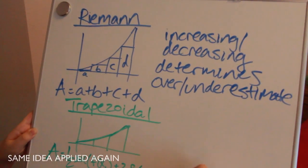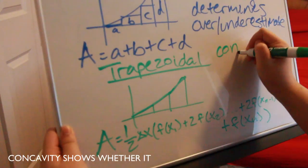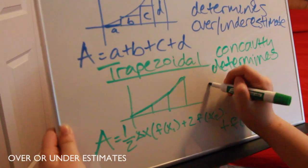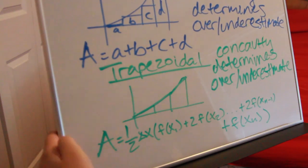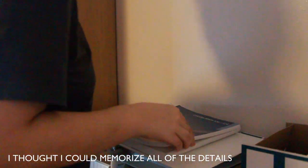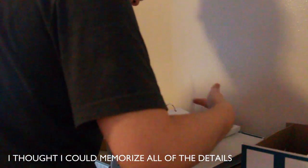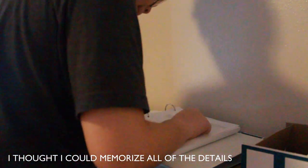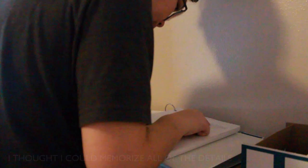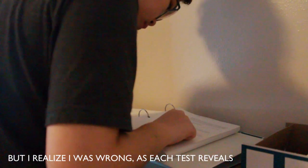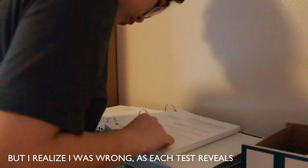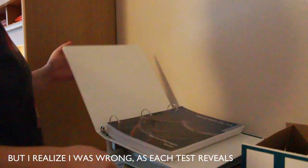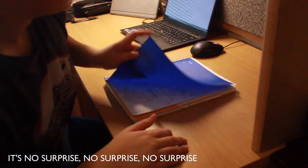Then trapezoids come in, same idea, apply it again. Concavity shows whether it over or underestimates. I thought I could memorize all of the details, but I realized I was wrong as each test reveals.